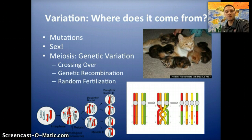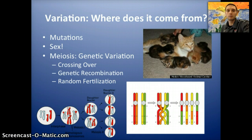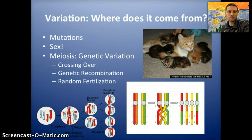Last but not least, there's simply random fertilization. Males produce millions of sperm cells over the course of their lifetime, and females have thousands of eggs. Which sperm cell and which egg cell actually combine to become an offspring is very random — and again, that just increases the variation and diversity in the offspring that are produced.